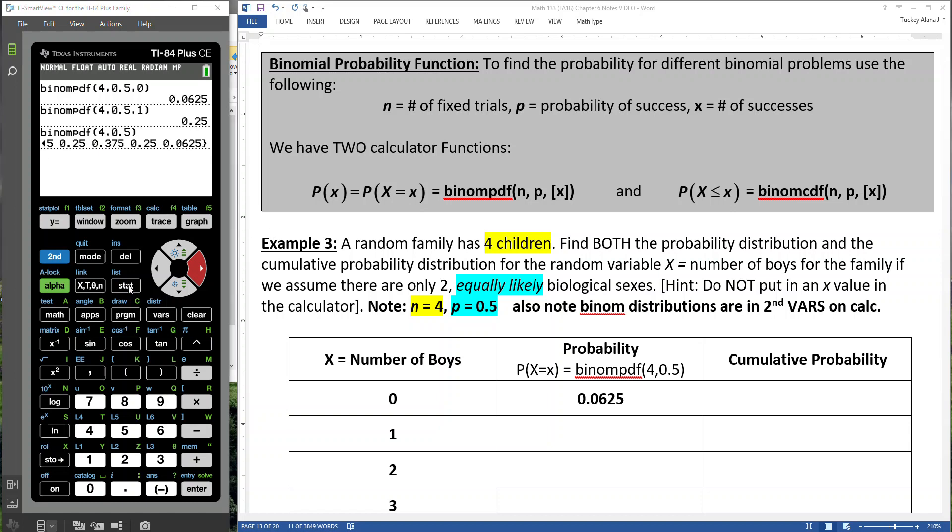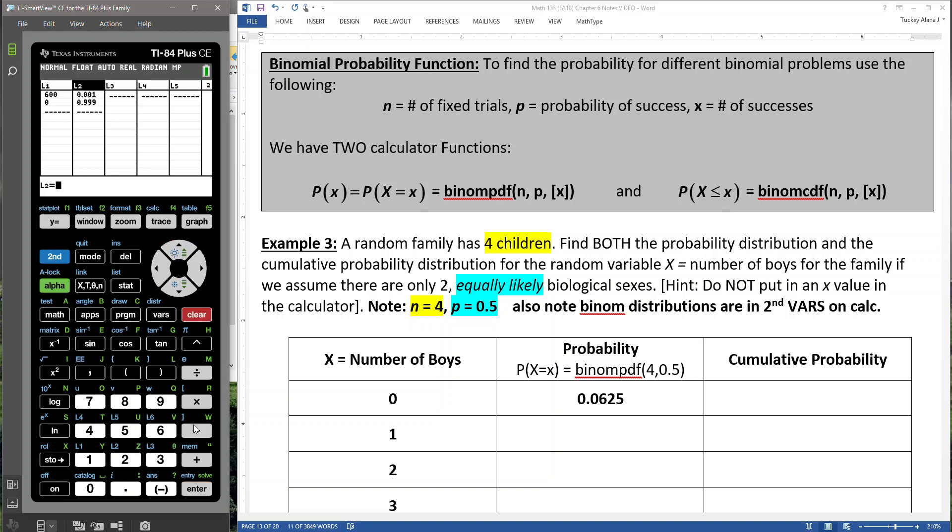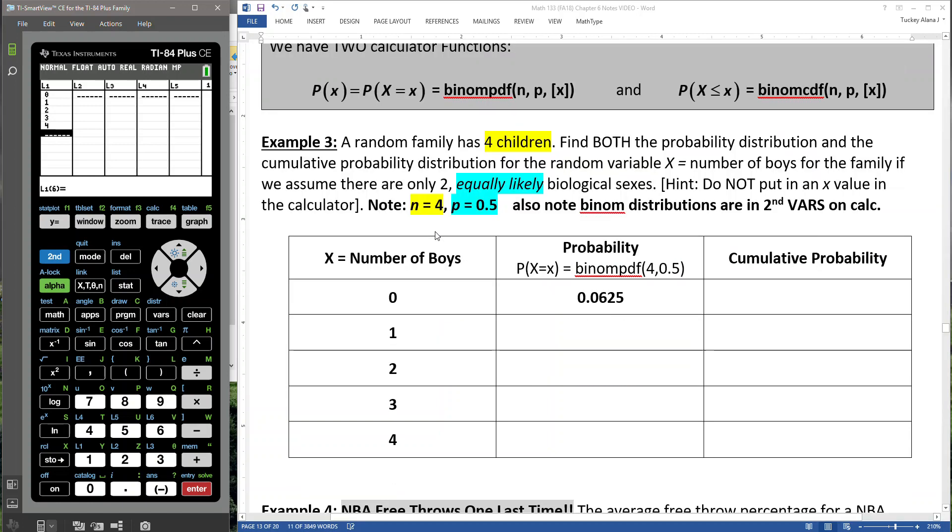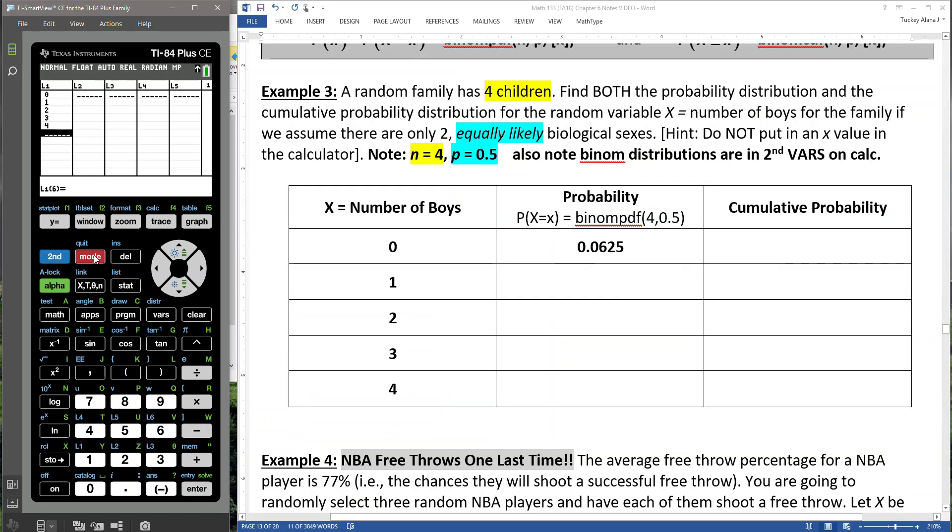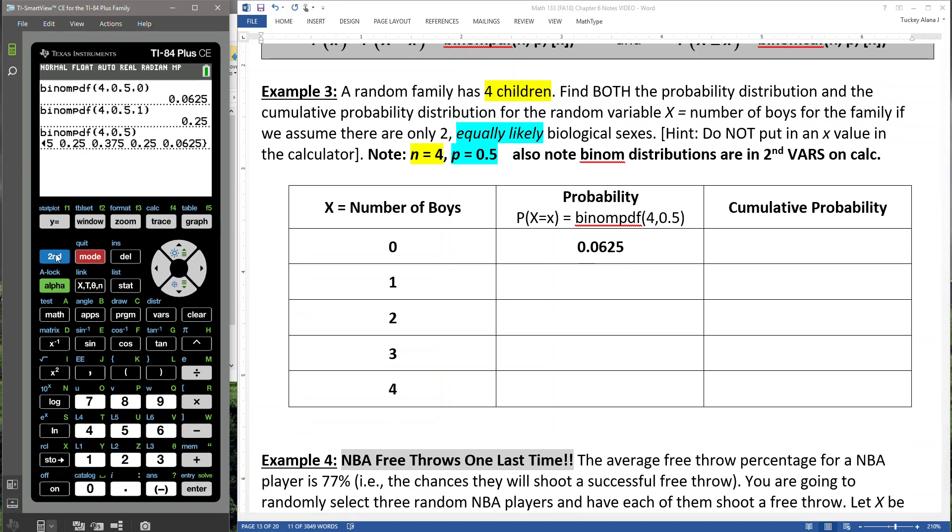Now, if you want to be really sneaky about it, let me teach you one more thing. If I go to Stat and go to Edit, clear out my old stuff. Remember that our options are 0, 1, 2, 3, and 4 for our number of boys. So if I go back here and I take what we just found, so 2nd distribution, alpha A. There it was, beautiful. And I run it.